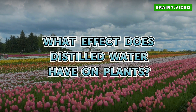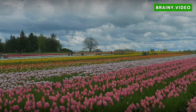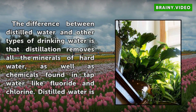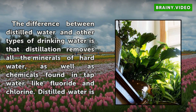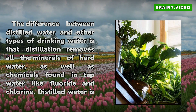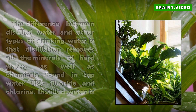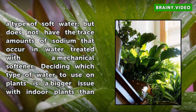What effect does distilled water have on plants? The difference between distilled water and other types of drinking water is that distillation removes all the minerals of hard water, as well as chemicals found in tap water like fluoride and chlorine. Distilled water is a type of soft water, but does not have the trace amounts of sodium that occur in water treated with a mechanical softener.